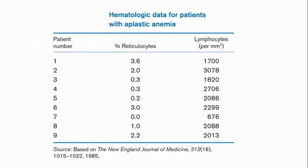Now, using the methods described in this video, are you able to determine relationship between percent reticulocytes and lymphocytes for these nine patients with aplastic anemia? And if such relationship exists, what is the extent to which they are related?